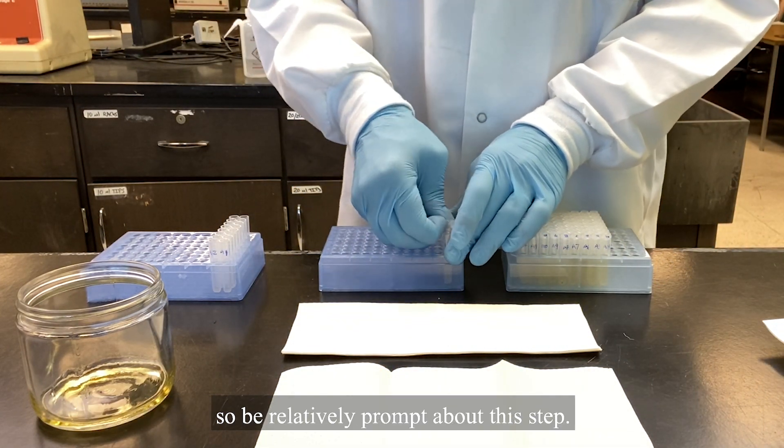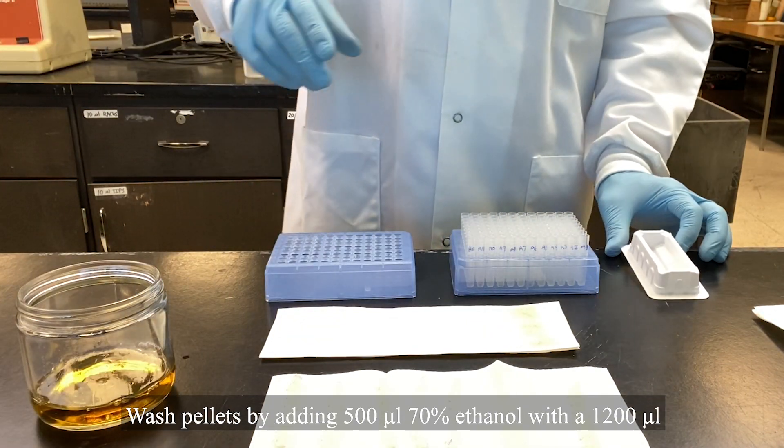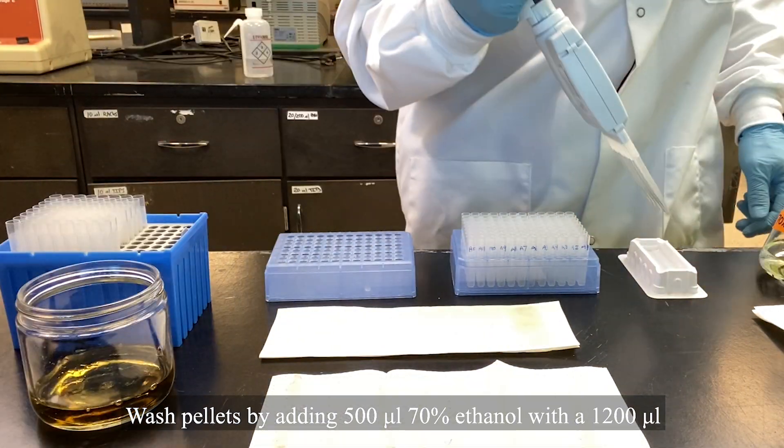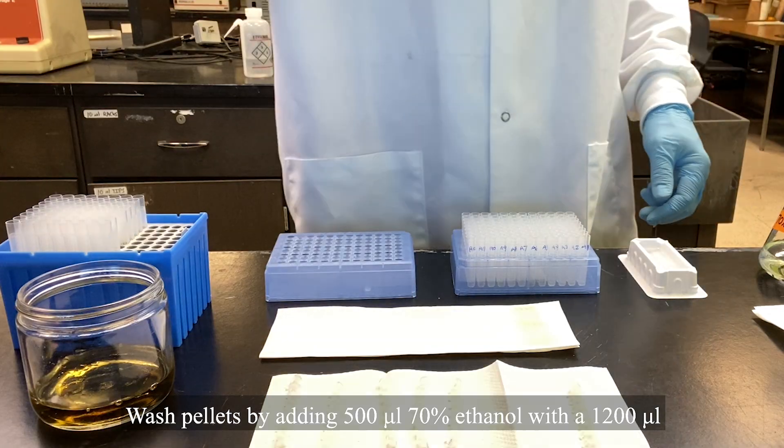Wash pellets by adding 500 microliters 70% ethanol with a 1200 microliter multi-channel pipette.